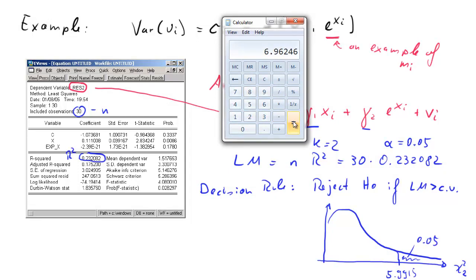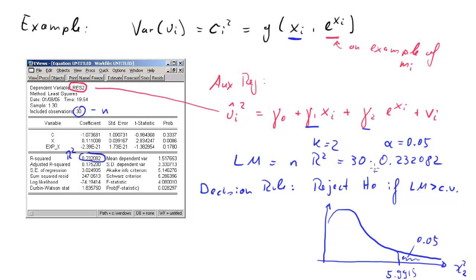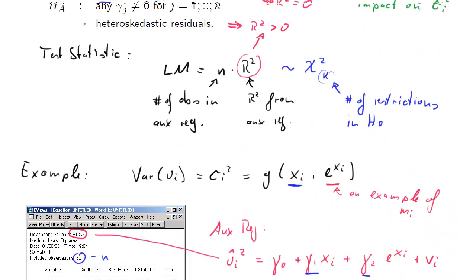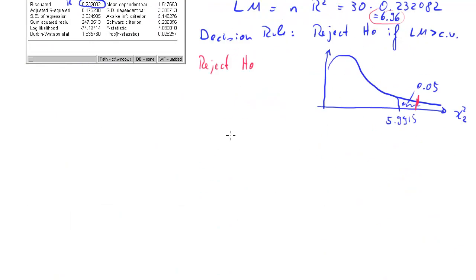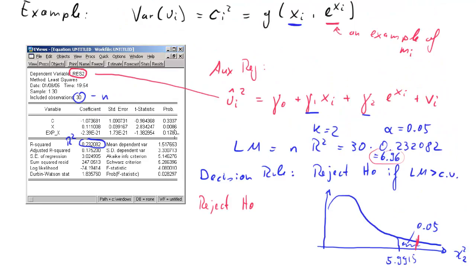Let's calculate our test statistic: 6.96, approximately. That value is to the right of the critical value, and therefore we reject H-naught according to our decision rule. That means we reject the null hypothesis of homoscedasticity, and we establish that there is evidence at an alpha of 5% that the error terms display heteroscedasticity. That would be our conclusion from this testing procedure. Whenever you do a test, never forget to state the decision rule — it's really important.